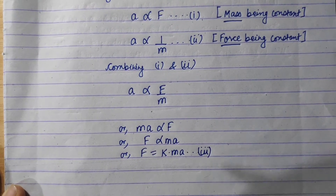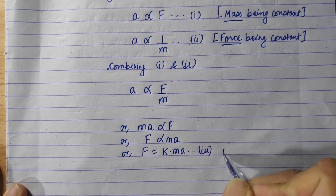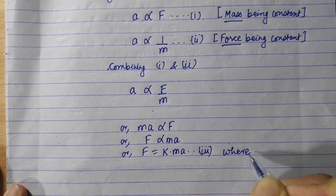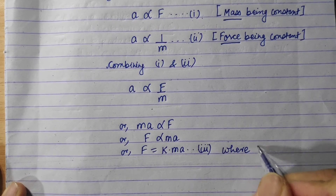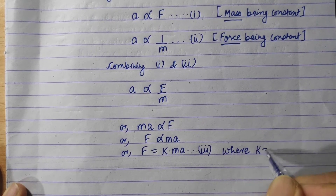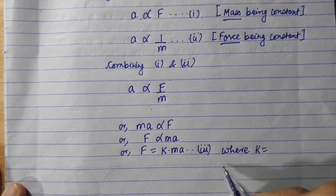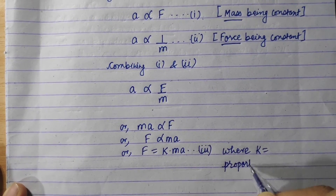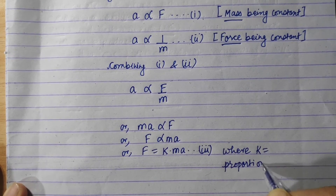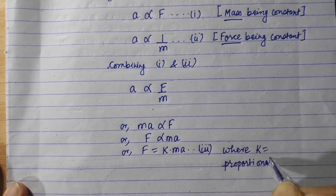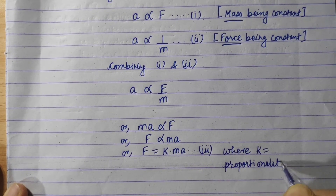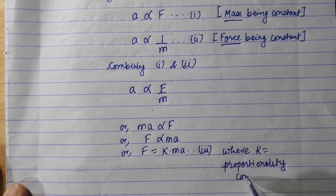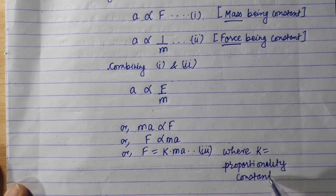So we can write F equals k times mA, where k equals the proportionality constant.